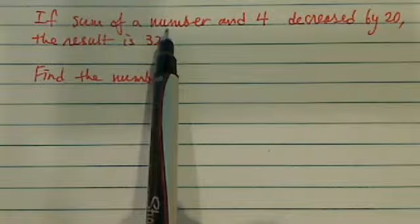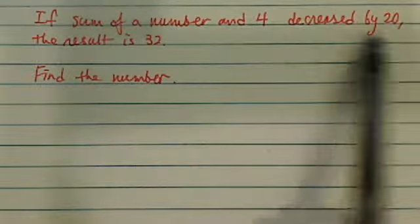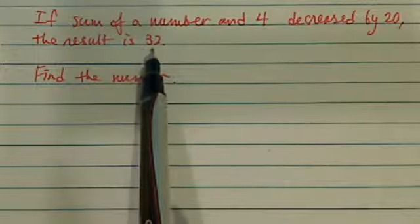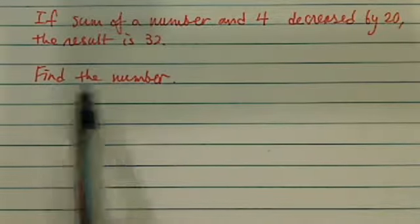We're told sum of a number and 4 decreased by 20. The result is 32. We're asked to find out what the number is.